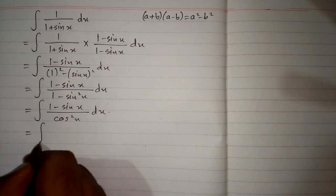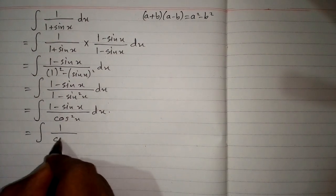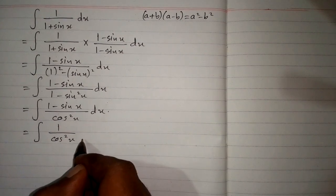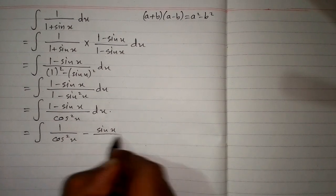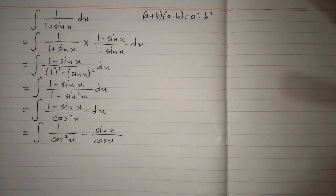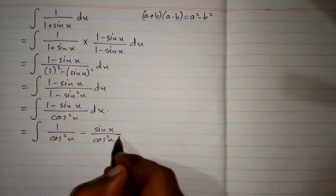We can break the fraction into two fractions: 1 upon cos square x minus sin x upon cos square x.